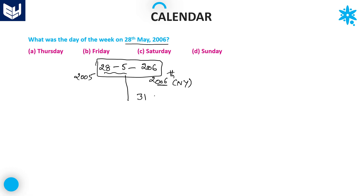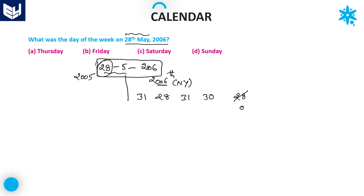Starting from January: January has 31 days, February 28 days, March 31 days, April 30 days, and for May you should not write 31 days — because we are calculating May 28th, you write only 28 days. The number of odd days in 28 days is 0 (exactly 4 weeks).